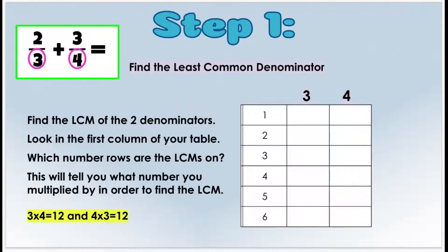Let's check it out step by step. I have a fraction addition problem: two-thirds plus three-fourths. With fractions, if I have two different denominators I can't add or subtract them — the denominators have to be the same. But I can't just change my numbers around in the fraction without doing something to the numerator, because then they wouldn't be equivalent and my problem would be wrong.